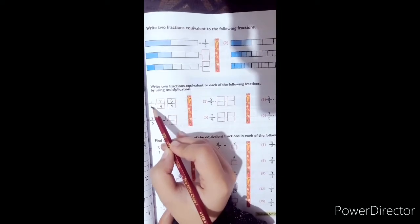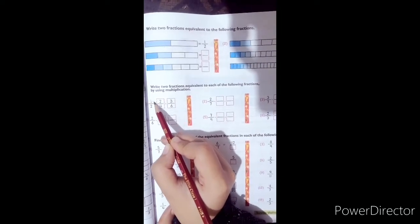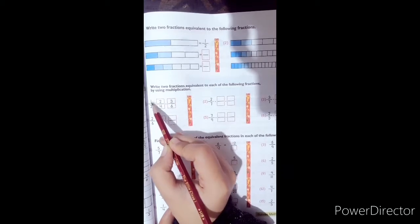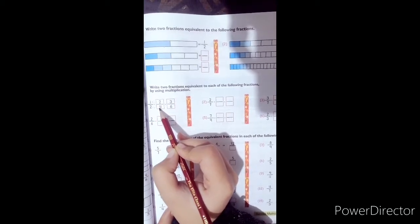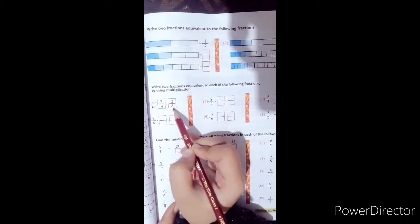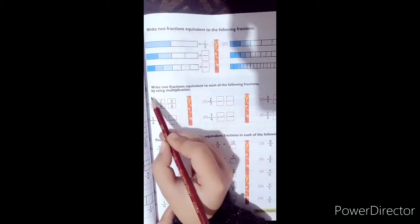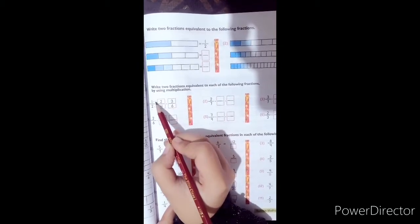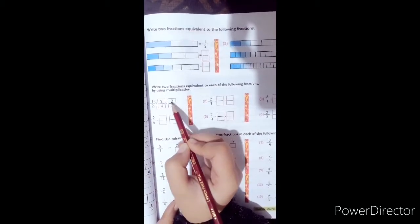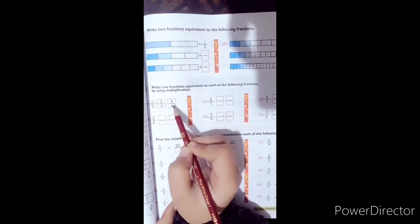If you observe the fractions, we have multiplied both sides by 2. 1 times 2 is 2, and 2 times 2 is 4. Same as 3 by 6. If we multiply our fraction by 3, numerator and denominator, 1 times 3 is 3 and 2 times 3 is 6.